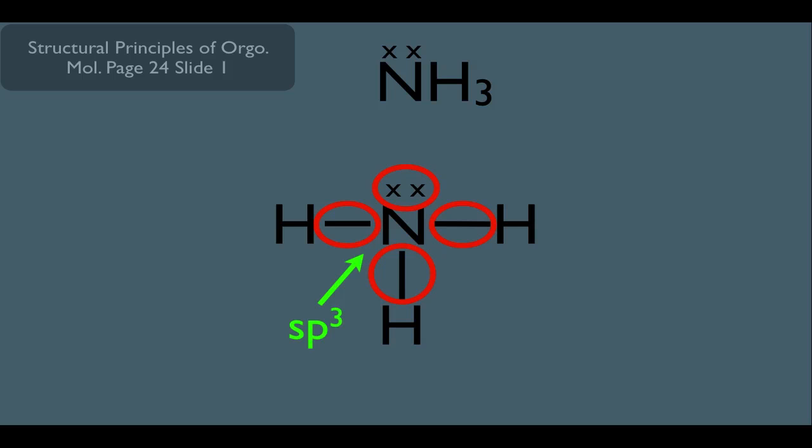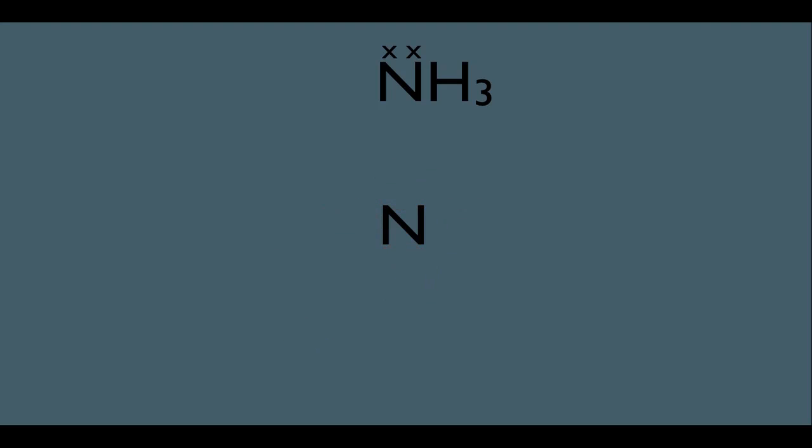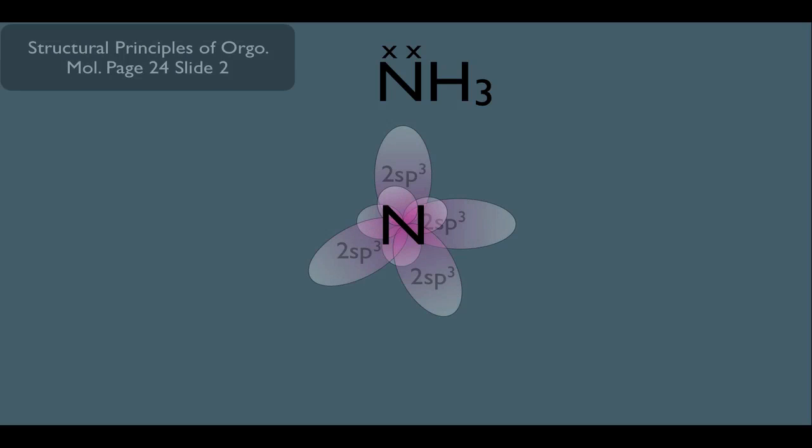Knowing this, let's look at the actual orbital arrangement of the bonds of ammonia. Remember, all atoms that are sp3 hybridized are simply surrounded by 4 sp3 hybridized orbitals. And as it stands right now, these orbitals would be 109.5 degrees apart.